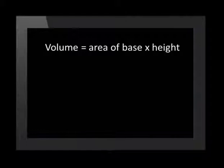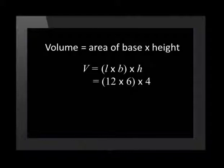Volume of a right prism is equal to the area of the base multiplied by the height of the prism. In this case, the base is a rectangle, so the volume is length times breadth times height, 12 times 6 times 4, which is equal to 288 meters cubed.